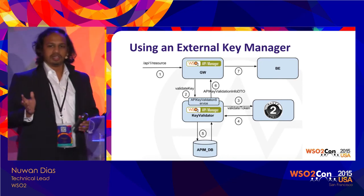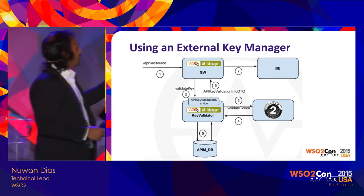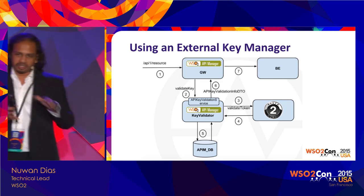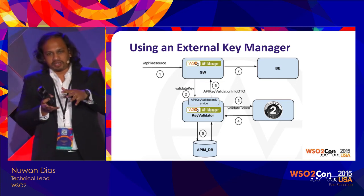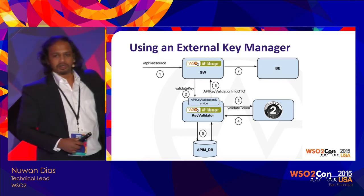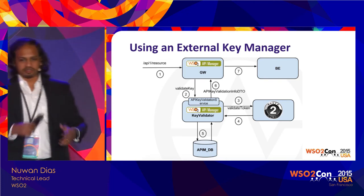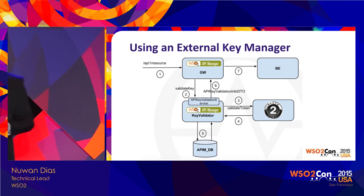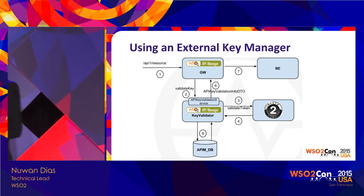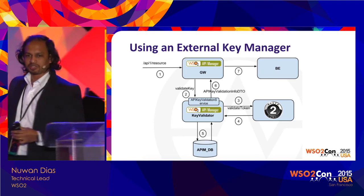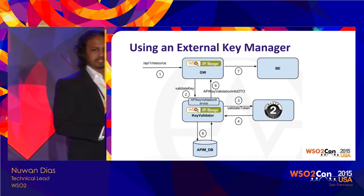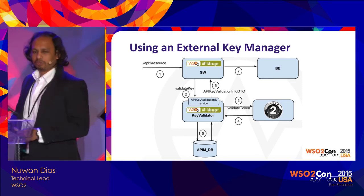This would be the request flow in place when using an external OAuth server. The incoming request arrives at the Gateway, and the Gateway calls the key validator — which could be external or inside the Gateway. The key validator talks to the external OAuth server to determine whether the received access token is valid. After that, the key validator does its own additional checks — for example, verifying you have a valid subscription to access the resource — and then gives the response back to the Gateway.